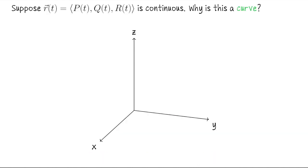Let's go over why I'm saying that a continuous vector-valued function of a single input, such as little r(t) equals P(t), Q(t), capital R(t), should be called a curve. You have a feeling for what a curve is, so why am I calling this a curve if it looks like a vector? And here's what we mean when we say that this is a curve.